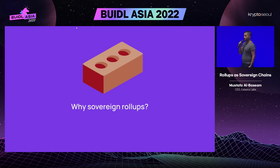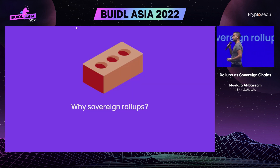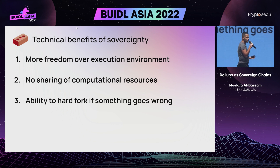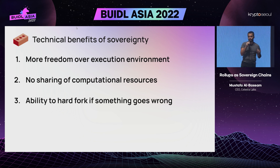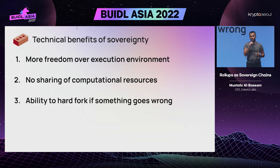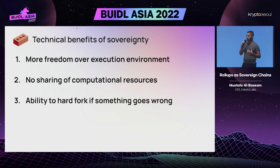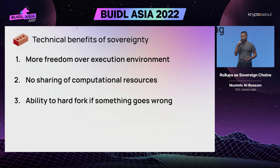So that explains what sovereign rollups are. Let's talk about why sovereign rollups are an interesting point in the design space. There are two categories of benefits: technical benefits and social benefits. In terms of technical benefits, it gives you more freedom over your execution environment — you don't have to design it so that Ethereum mainnet EVM must understand its headers, fraud proofs, and ZK proofs efficiently. If you're using a more expensive ZK scheme or an execution environment that can't easily be fraud-provable, you can do it more easily as a sovereign rollup, without being limited by potential inefficiencies in the enshrined settlement layer. That also means you don't have to share the computational resources of that settlement layer.